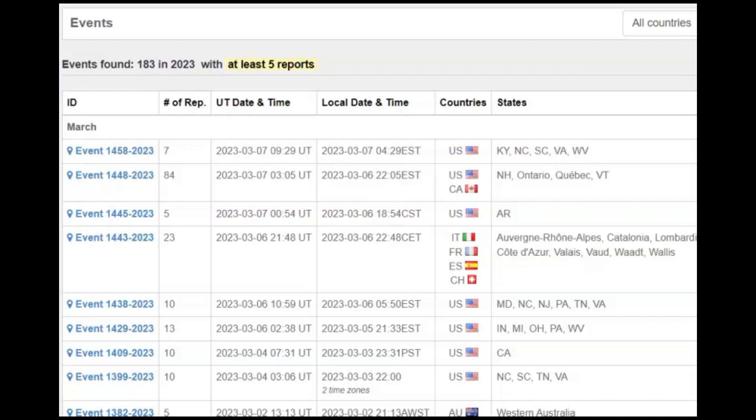On AMS for yesterday, there was seven reports of a fireball seen in Kentucky, North Carolina, South Carolina, Virginia and West Virginia. Also, yeah, I should do a report on that.